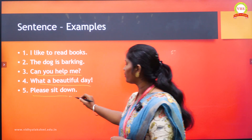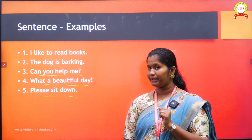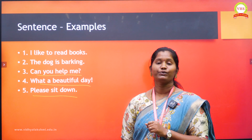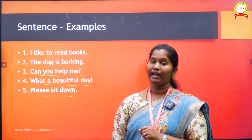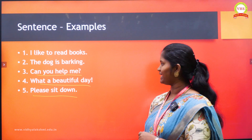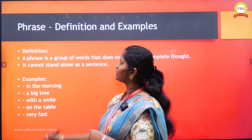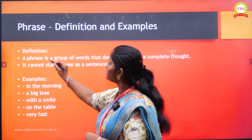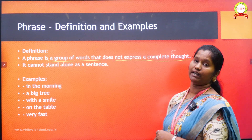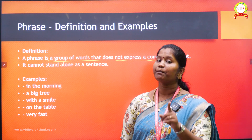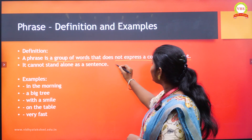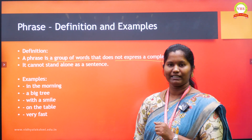A sentence starts with a capital letter and ends with a full stop, question mark, or exclamation mark, and it must also have a subject and a verb. It makes complete sense. Clear? Now see the phrase. What is a phrase? A phrase is a group of words that does not express a complete thought. But a sentence makes a complete thought, while a phrase does not express a complete thought.